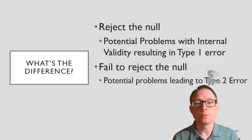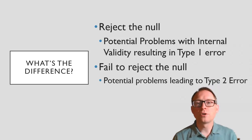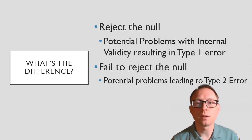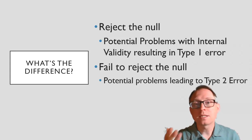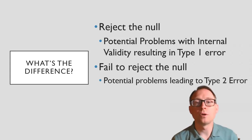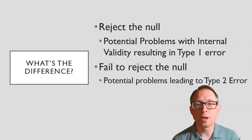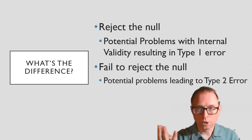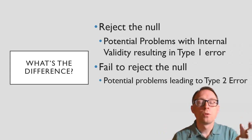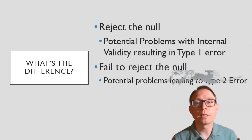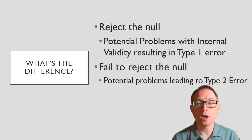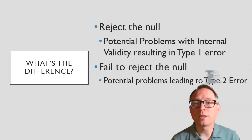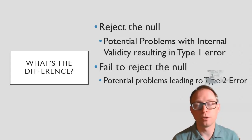When you fail to reject the null, you're saying there's really no difference between people who study and those who don't study in terms of their happiness. Well, you might be making a type 2 error, where there really is a difference but something about your study made it so you could not find it. The problems when you reject the null might lead you to a type 1 error. The problems when you fail to reject the null might lead you to a type 2 error. Make sure you know: are these problems based off of rejecting the null or failing to reject the null?